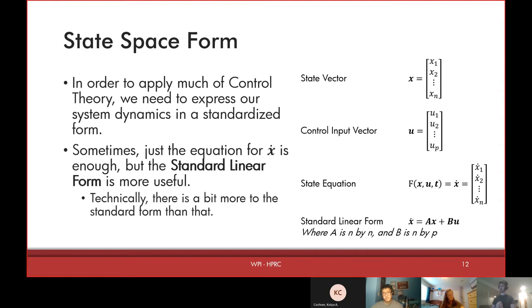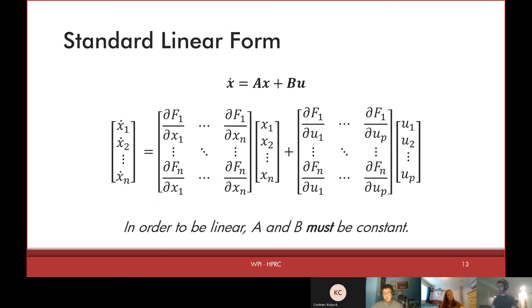And we kind of combined this all to get our standard linear form, which is X dot equals A X plus B U where A is an N by N. So essentially it's a square matrix. B is an N by P, which is not necessarily a square matrix. And written out more completely, we have X, A, or sorry, this is DX, X, B, and U. And it's important to note that for a system to be linear, A and B have to be constant. Non-linear controls is a thing you can do, but that's a little bit beyond the scope of this course right here. That's like a little higher level.